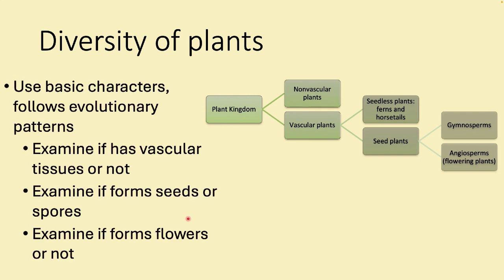For plants, taxonomy can be worked out with a series of questions. First: is the plant vascular — does it have tissues to move water? If no, it's non-vascular; if yes, it's vascular. Then: does the vascular plant make seeds? If no, it's seedless; if yes, it's a seed-making plant. Finally: does it form flowers? If no, it's a gymnosperm; if yes, it's an angiosperm.